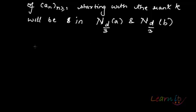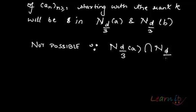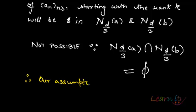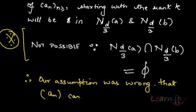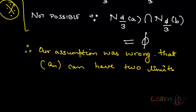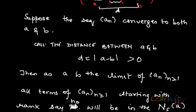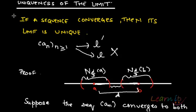Which is not possible? Why? Because, as we can see, the neighborhood of a intersected with the neighborhood of b equals the empty set — there is nothing in this intersection. Therefore, we have got a contradiction. Our assumption was wrong that a_n can have two limits. Therefore, we have just proved that a_n can have only one limit, and that limit is unique.